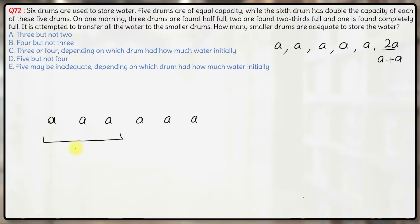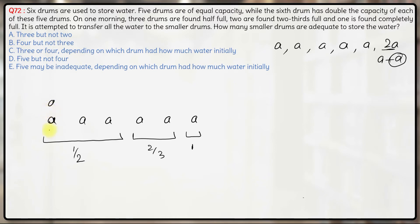Out of these 6 drums, 3 drums are half full, 2 of them are 2/3 full, and 1 of the drums is completely full. Now, the 2A drum can be either half full, 2/3 full, or completely full. So this extra capacity A of that drum can be added to one of these groups.